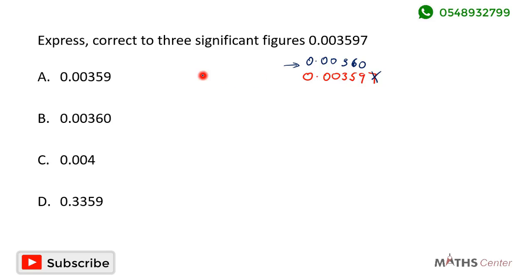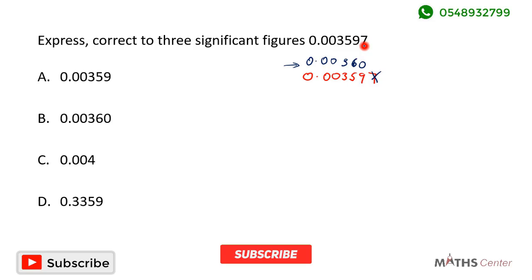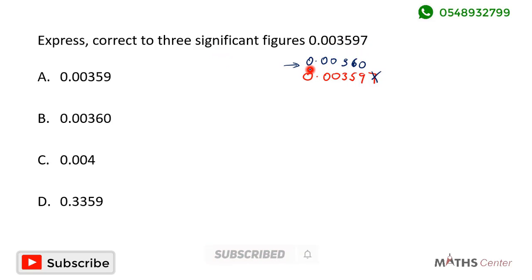When we correct 0.003597 to 3 significant figures, we get 0.00360. Looking through the options, the correct option is B.